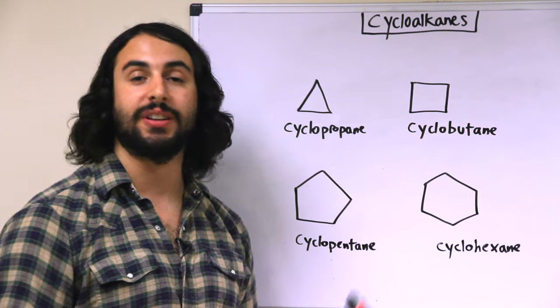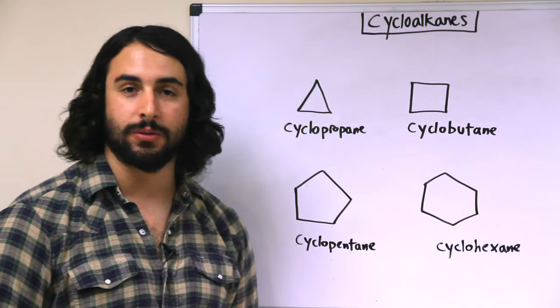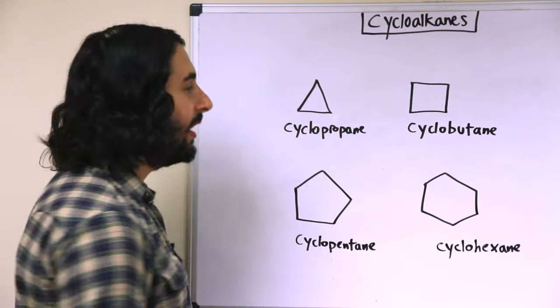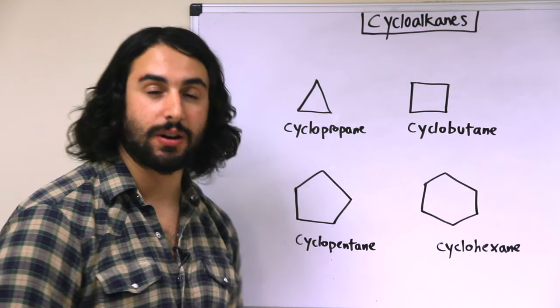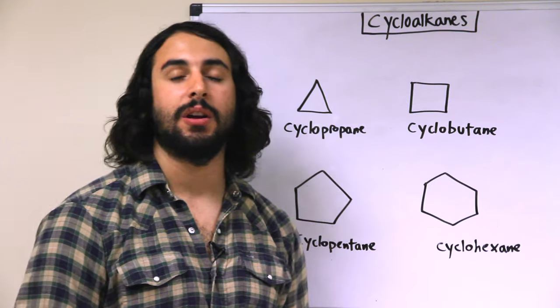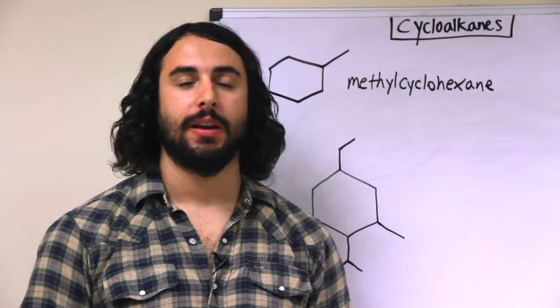prefix cyclo to indicate that it is cyclic, but the rest is the same. So a three carbon ring is a cyclopropane, four cyclobutane, cyclopentane, cyclohexane, etc. We would use the same prefixes indicating the number of carbons that we already know. Now let's see